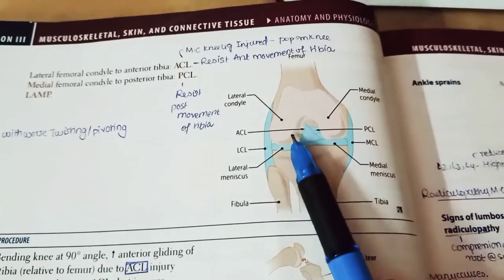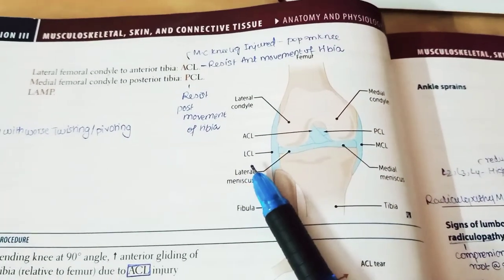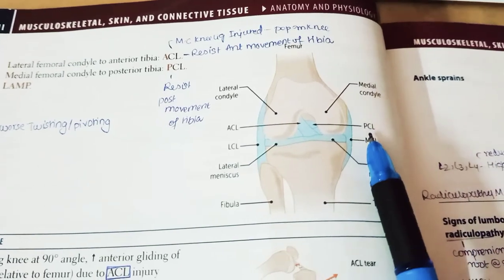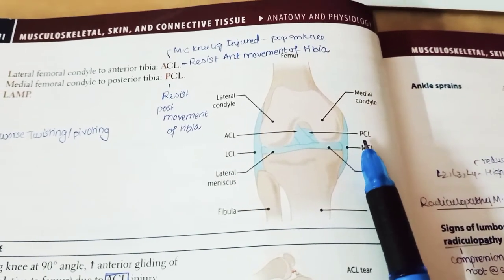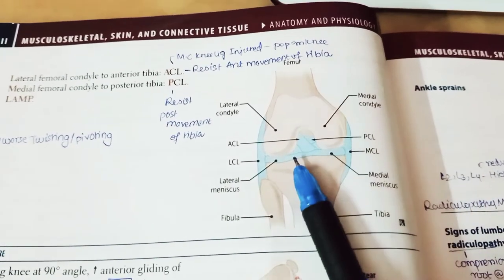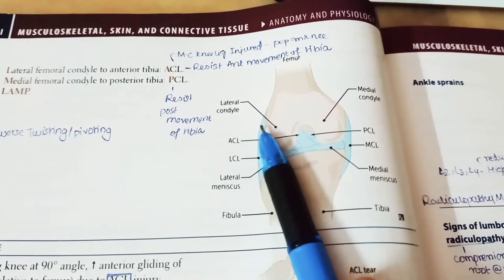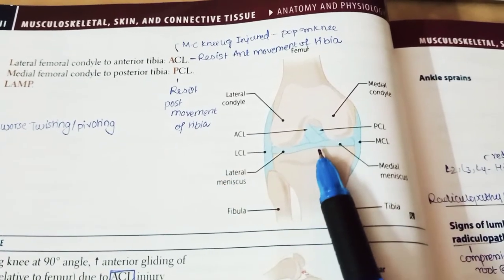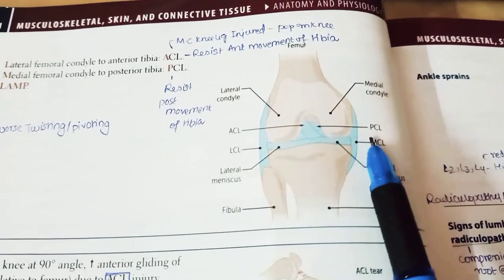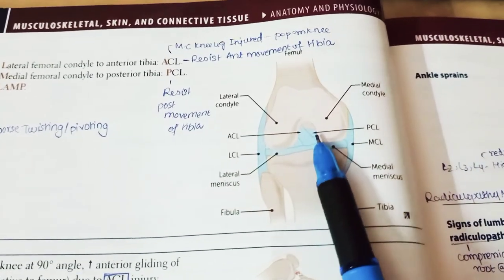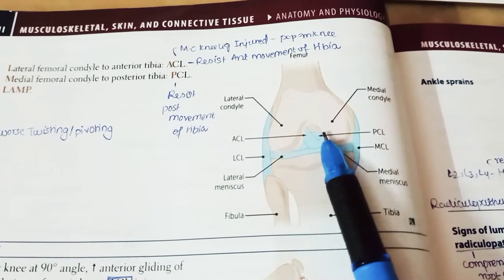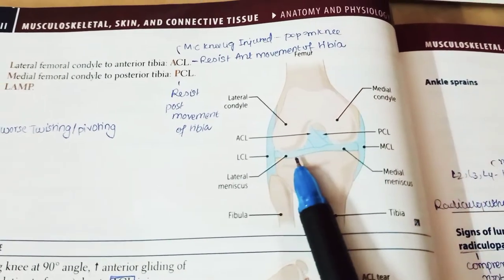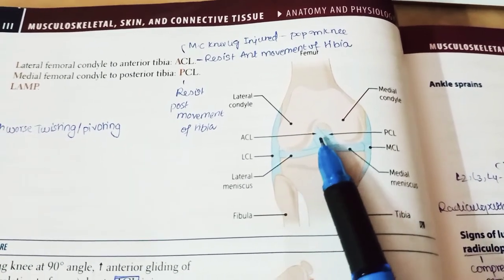Continuing with knee examination, we need to know about two ligaments: the anterior cruciate ligament (ACL) and the posterior cruciate ligament (PCL). The ACL comes from the lateral condyle, passing anterior to the tibia. The PCL comes from the medial condyle to the posterior part of the tibia.